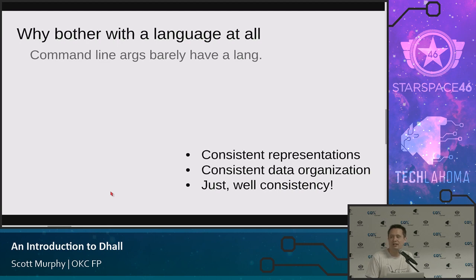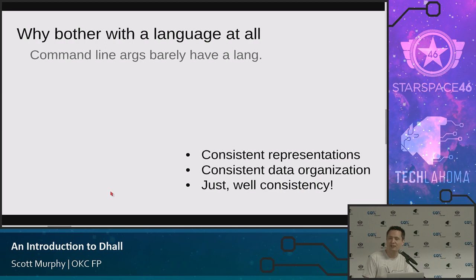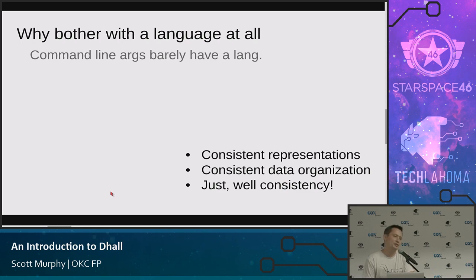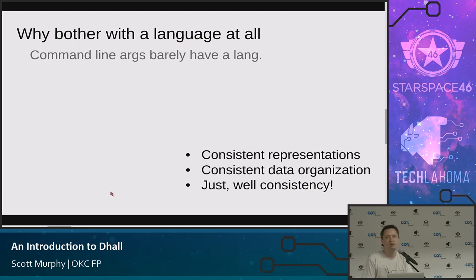At the other extreme is don't use any language at all. There are places where they really don't have a language that you probably deal with — for instance, command line arguments. If you've ever slurped in command line arguments from a Bash file, you know that it's just anything goes. It's just a big string and then you parse the string however you want. It's really fair to say that's a completely unstructured environment. There are conventions that people use, sets of argument conventions, but they really are just done by convention. I think that there should be a language — you want consistent representations, consistent data organization, and consistency everywhere.